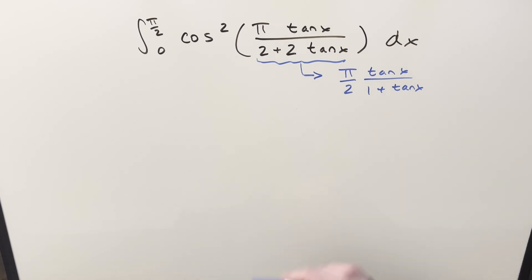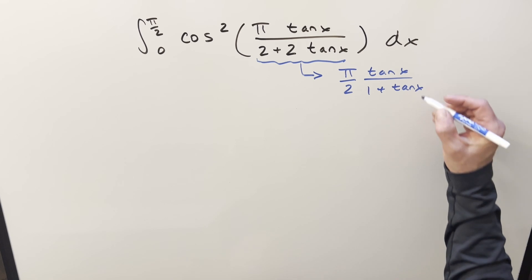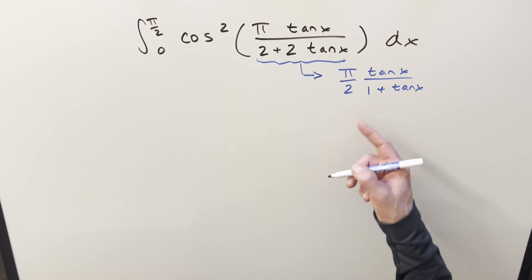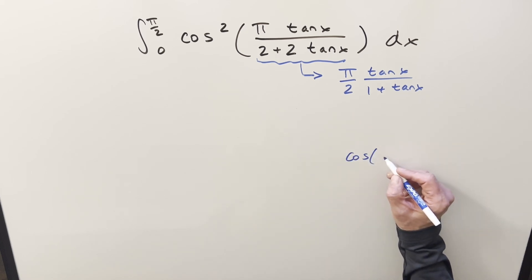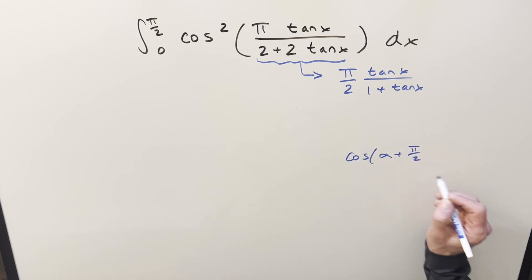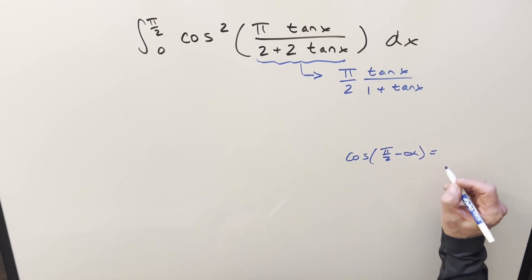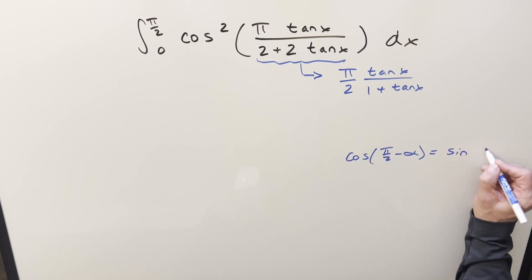And then at first, it's not really clear what that does for us, because we still have a complicated expression. But the thing about it is, with π/2, it's making me think of the complementary angle formula. I mean, it's not set up for it, but for the complementary angle formula, what we would have is cosine of π/2 minus α. This is going to be the same thing as sine of α. So in order to do this, I need this form.